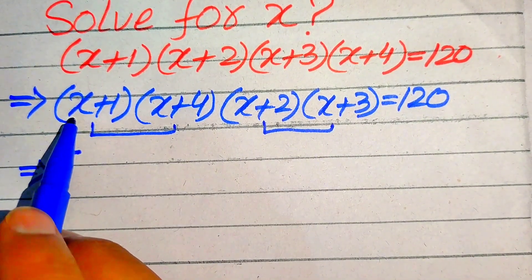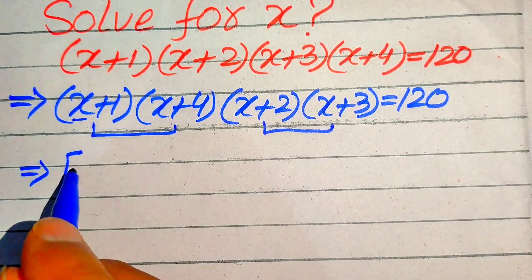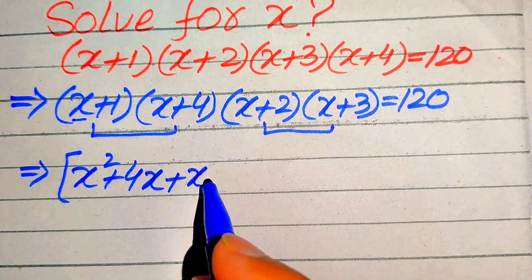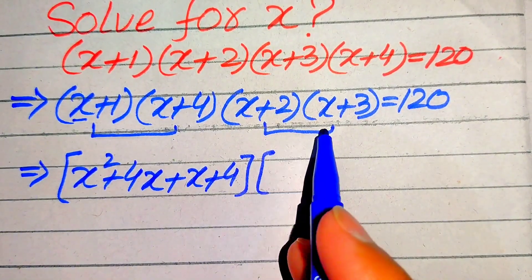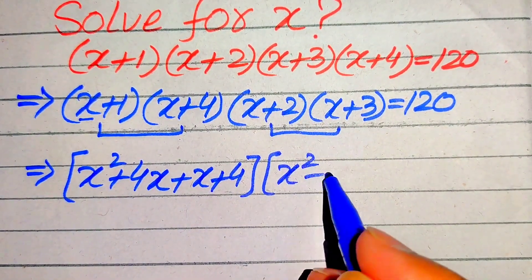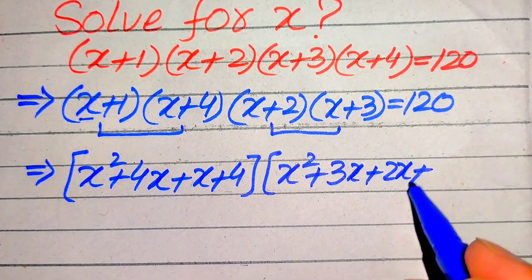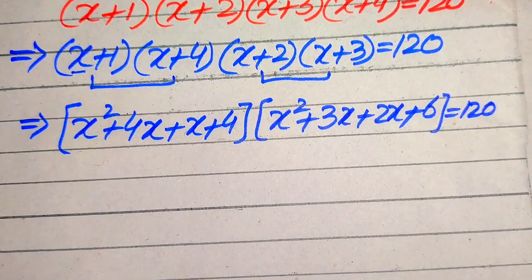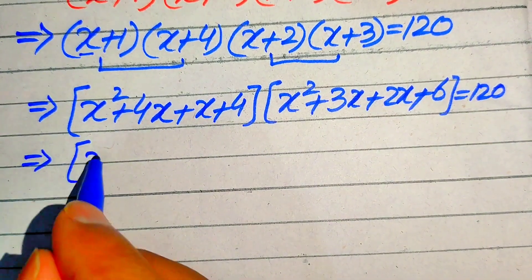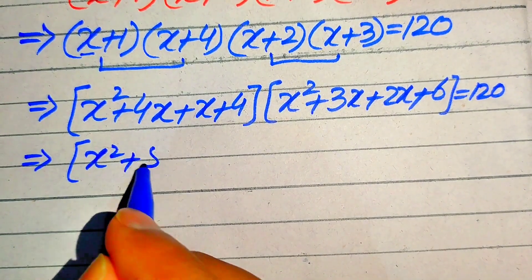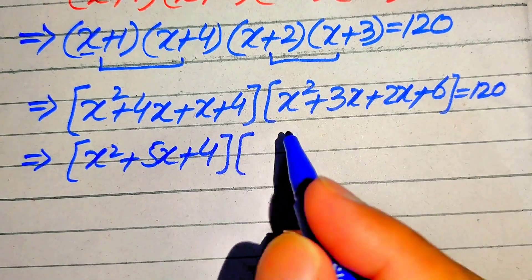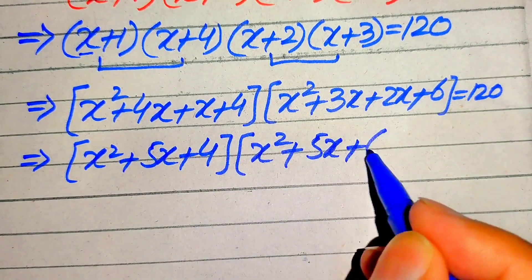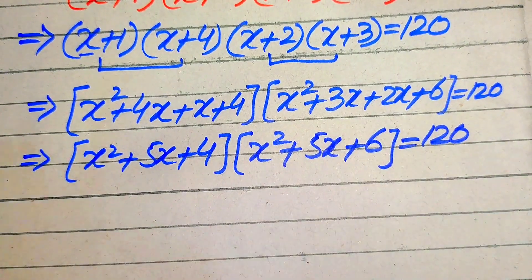We multiply: first we fix x and multiply on both values to get x² + 4x, then multiply 1 on both values to get x + 4. In the same pattern we multiply the other two factors to get x² + 3x + 2x + 6. This whole equation equals 120. Adding like terms: 4x + x = 5x + 4, and 3x + 2x = 5x, so we have (x² + 5x + 4)(x² + 5x + 6) = 120.